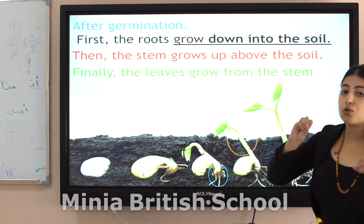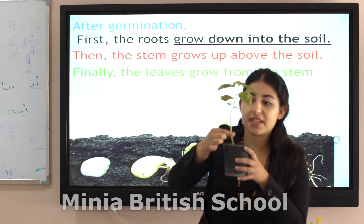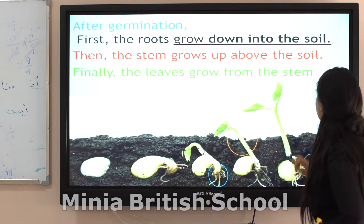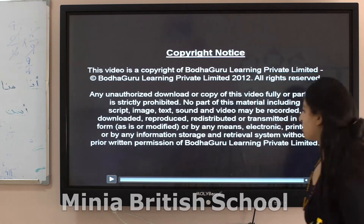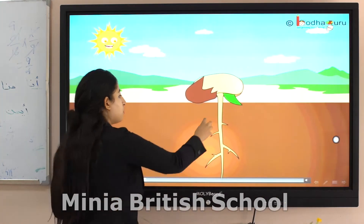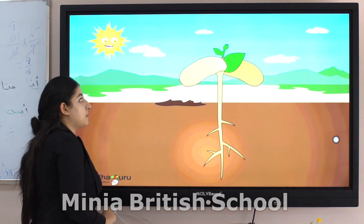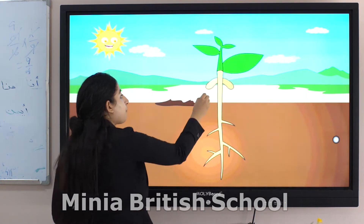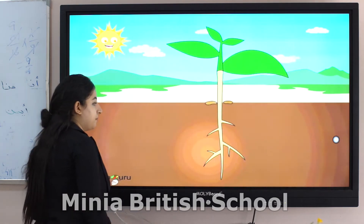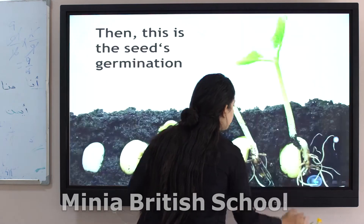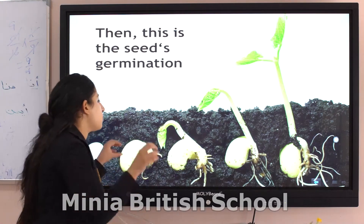Finally, the leaves grow from the stem. These are leaves. They can grow from the stem. Can you see? The roots grow down this way, but the stem grows up above the soil. These are leaves growing from the stem. So this is the seed germination — the seed grows, which means germination.